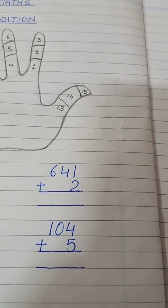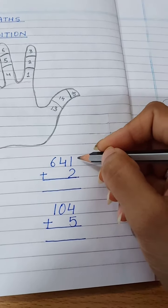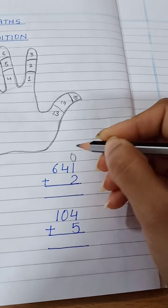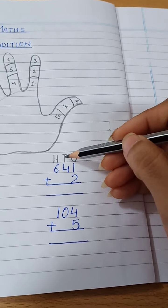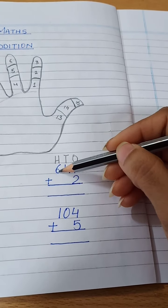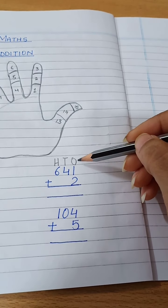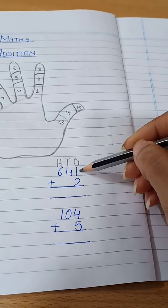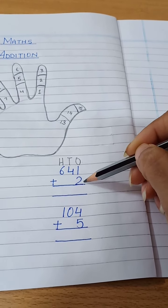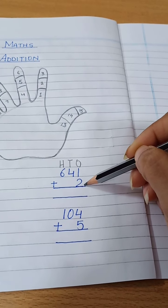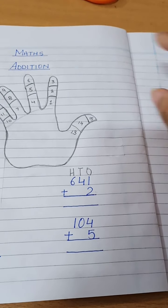Let's go to the next question: 641 plus 2. As you can see, in 641, here is the ones place, here is the tens place, and here is the hundreds place. Now first we will add the digits in the ones place, that is 1 and 2. So first I will be taking 1 and then I will take 2.